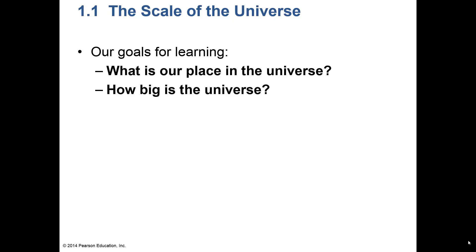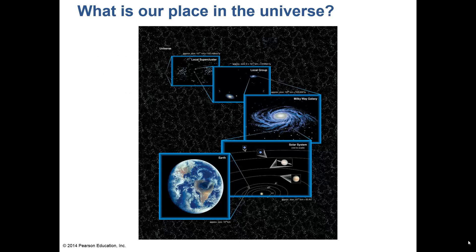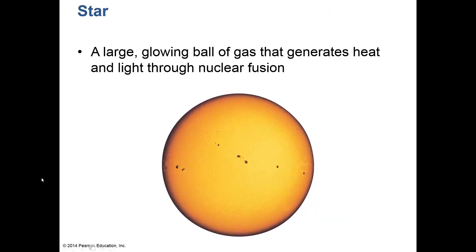Our goals for learning this: what is our place in the universe and how big is the universe? It is very big — 13.7 billion light years across. We start with the earth, one of eight planets in the solar system. The solar system is just one of 200 billion stars in the Milky Way galaxy. The Milky Way is just one of 24 galaxies in the local group, and we belong to a supercluster of galaxies with millions and billions of galaxies, each with 200 billion stars.